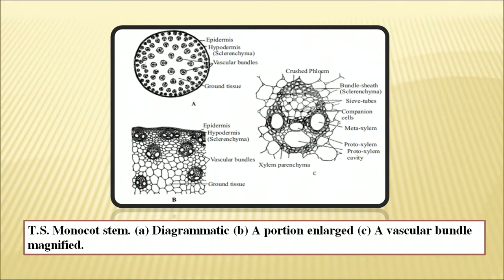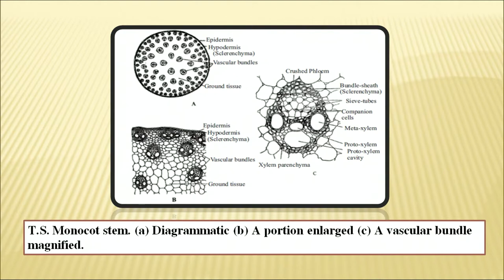Figure B shows a magnified version of the stem, and figure C shows the nature of cell walls and types of tissue. In diagram C, there is metaxylem and protoxylem in Y-shaped arrangement, along with companion cells and sieve tubes which represent phloem tissue. The bundle sheath is sclerenchymatous in nature.